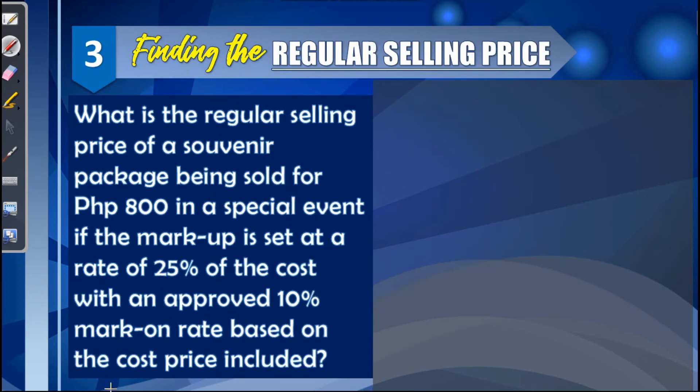Third example: finding the regular selling price. What is the regular selling price of a souvenir package being sold for 800 pesos in a special event if the markup is set at a rate of 25% of the cost with an approved 10% mark on rate based on the cost price included? This problem is an extension of the previous item, so we note the cost we computed: 592.93 pesos.